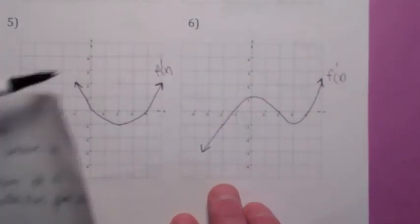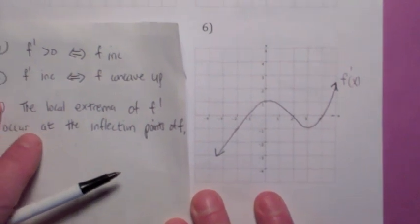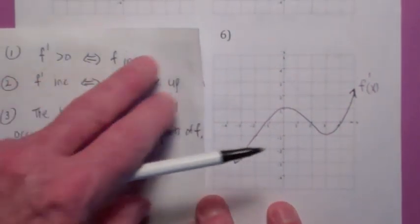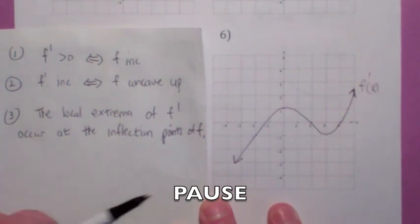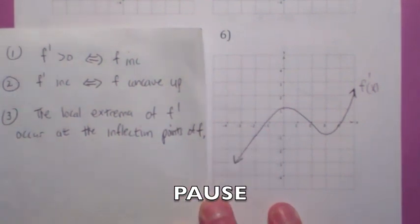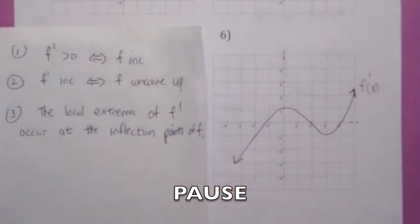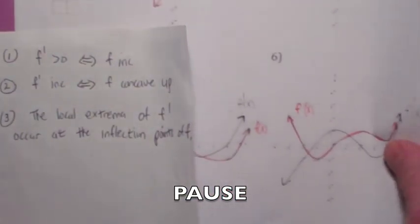Alright, let's keep on going here. You're doing great. Try this one. Try number 6. Hit the pause button. See if you can sketch the graph of f. We're assuming f goes through 0, 0 and has this as its derivative.